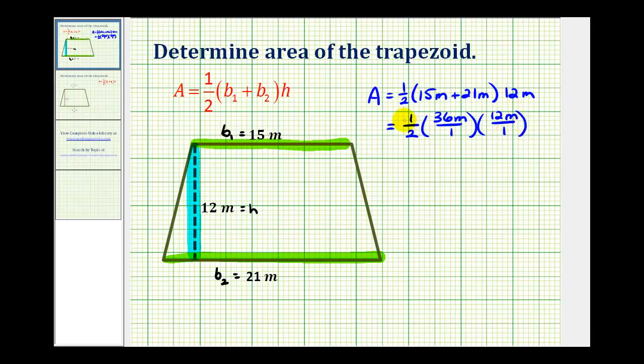Before we multiply, we want to simplify any common factors between the numerators and denominators. Notice that 2 and 36 share a common factor of 2. To show this, I'm going to write this as one-half times...